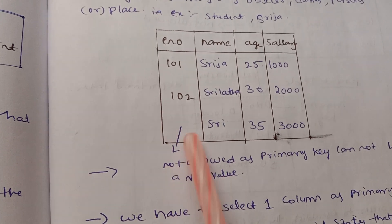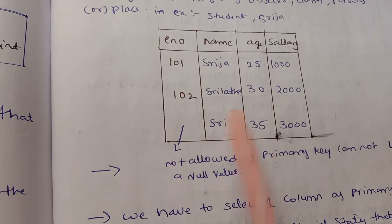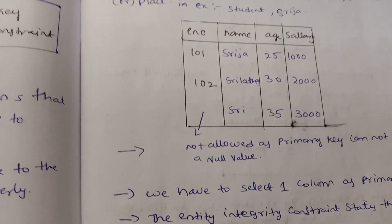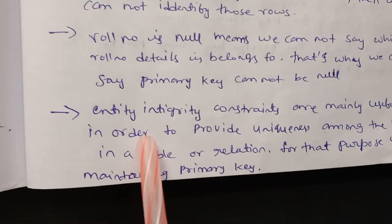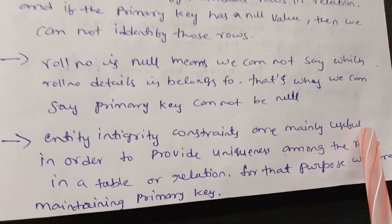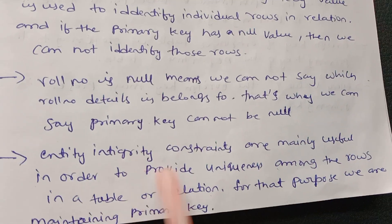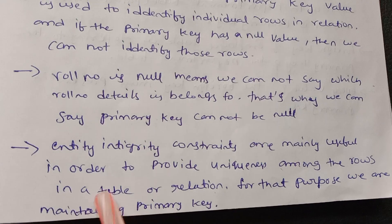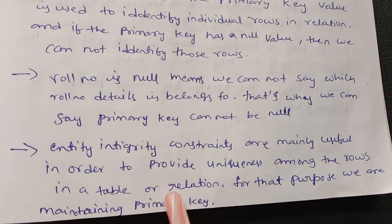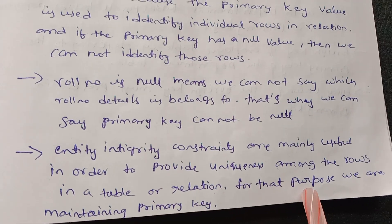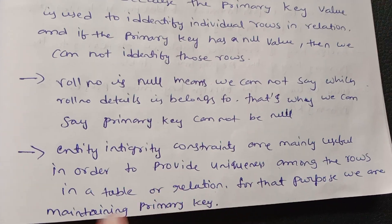Entity integrity constraints are mainly useful in order to provide uniqueness among the rows in a table or relation. For that purpose, we maintain the primary key.